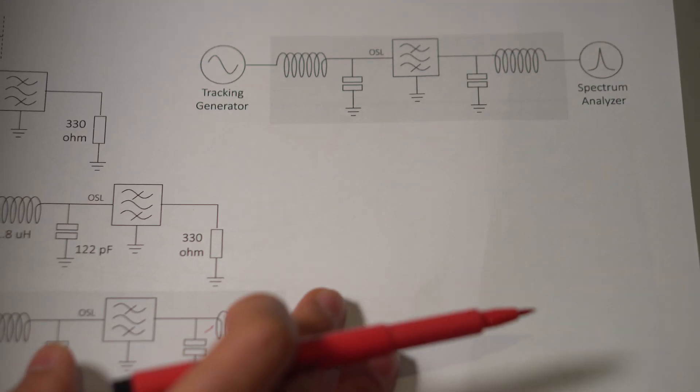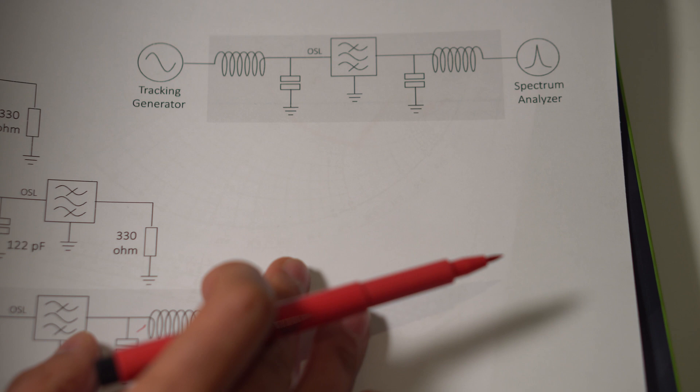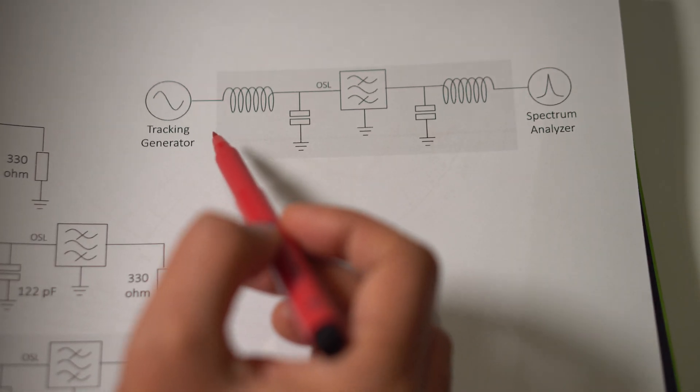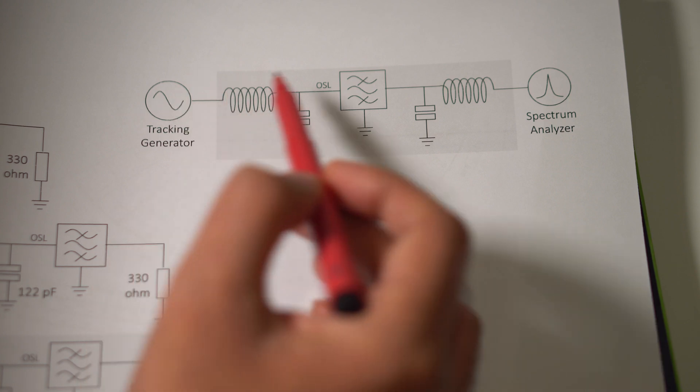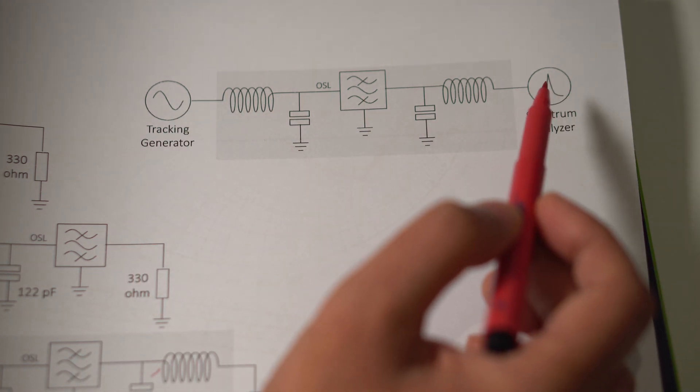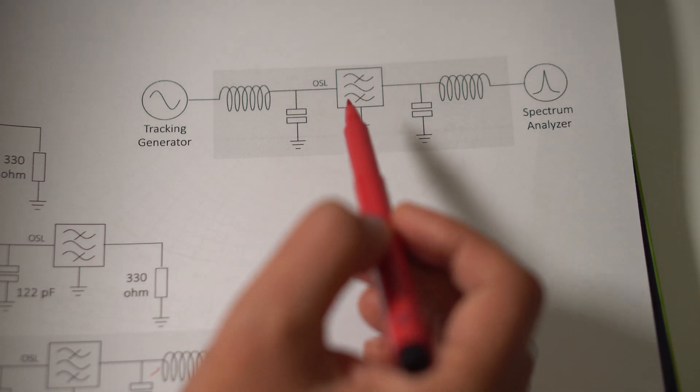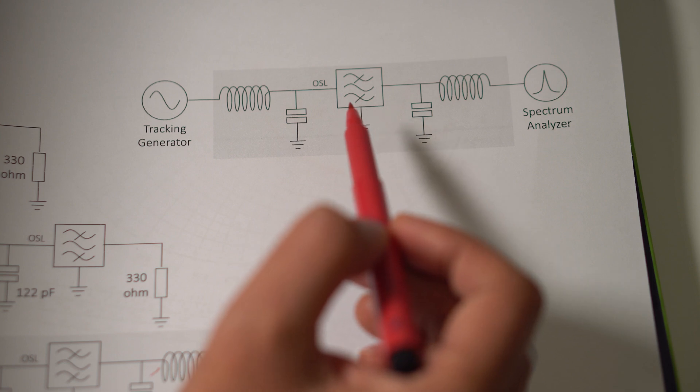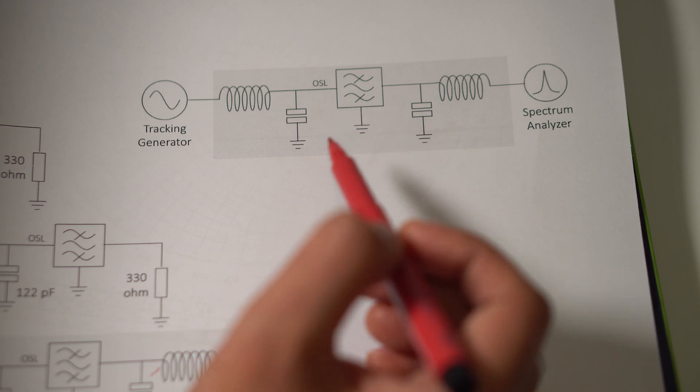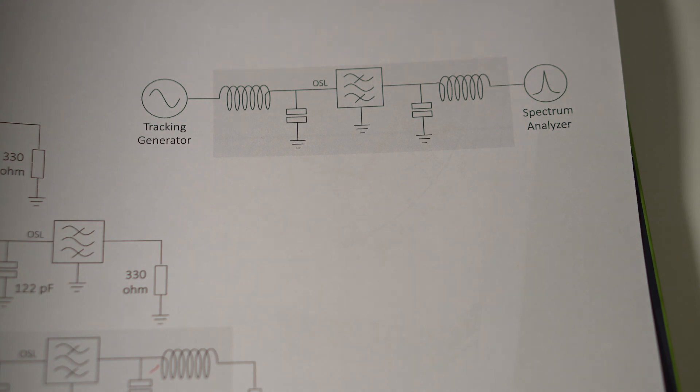Then I just switched to spectrum analyzer mode. And in that case, a tracking generator generates a signal. And I can see the output on the spectrum analyzer here. And from that, I was able to match the spectrum analyzer output with the data sheet to see what the insertion loss was and what the signal level was in the stop band. And that's it. I hope that was useful. Thanks for watching.